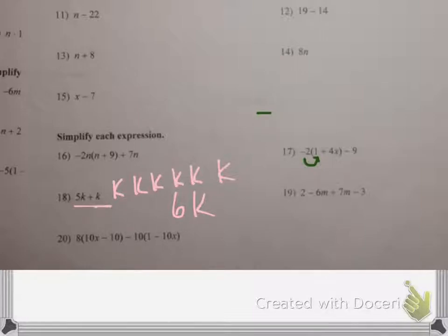It's combining like terms. We can put these together. And I guess one important point I should mention is this k that's hanging around all by itself. It's understood to have a 1 in front of it. Mathematicians are kind of lazy. They don't write it, but it's understood to have a 1 in front of it.